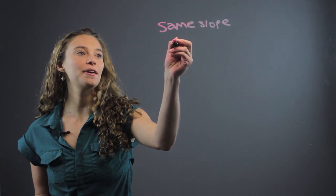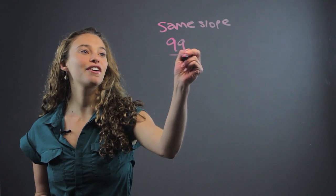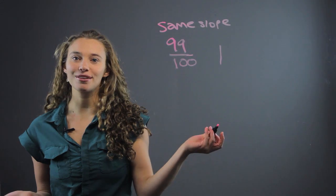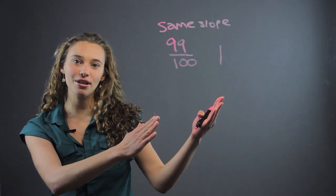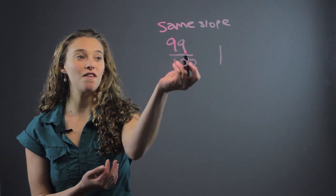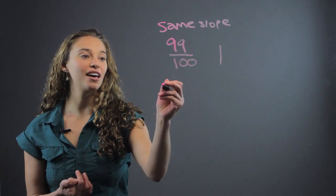So it could be something like 99 over 100 as one slope and one as a slope, right? Those are both very similar slopes. So if you wanted to write equations where one has a slope of 99 over 100 and the other has a slope of one.